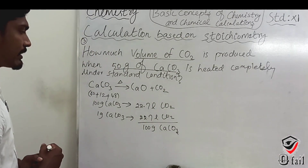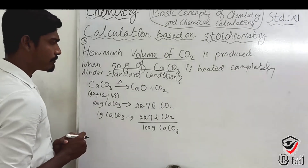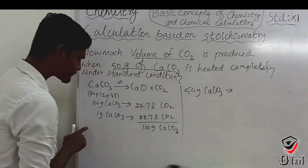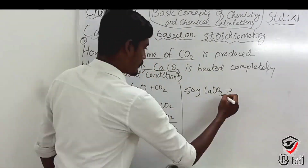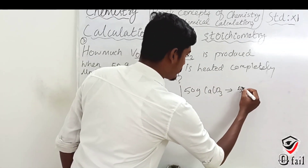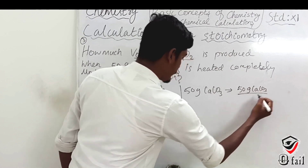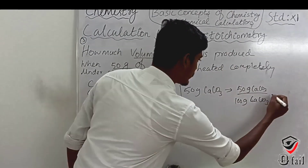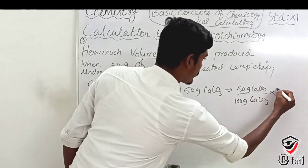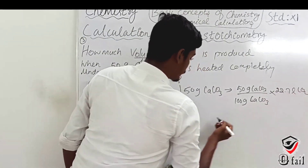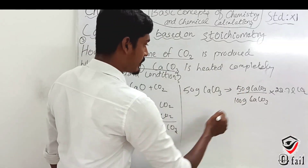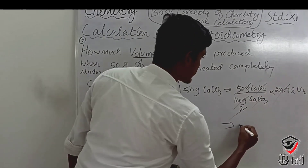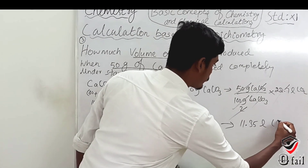Now for 50 grams of calcium carbonate: 22.7 liters divided by 100 grams, multiplied by 50 grams. Calculate: 22.7 × 50 ÷ 100 = 11.35 liters of CO₂.